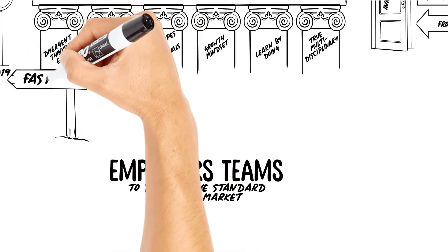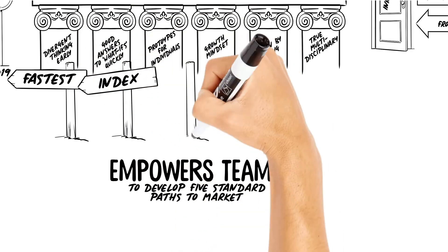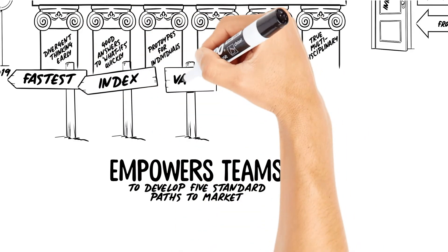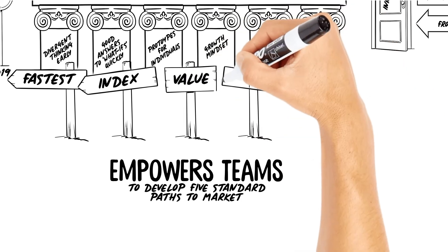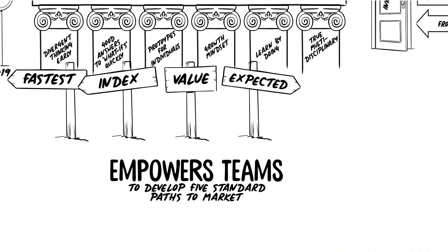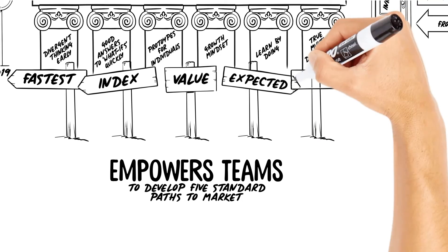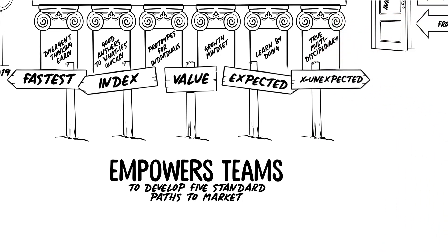We'll work on the fastest path to market, the index patient or precision medicine path, the value path which is the lowest cost approach, an expected path, the default for an asset that looks like this, and an unexpected or out of the box approach, the X option.